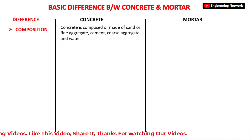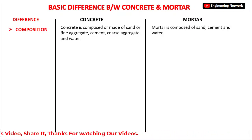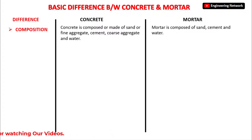The composition of mortar is a little bit different from concrete. Mortar is composed of sand, cement, and water. So basically the main difference in composition is that concrete uses coarse aggregate, while mortar does not use any kind of coarse aggregate.